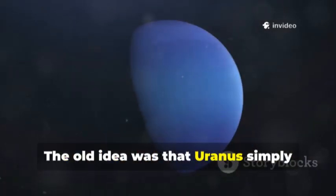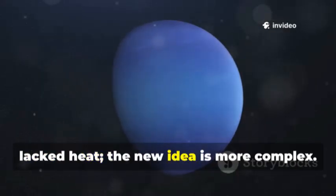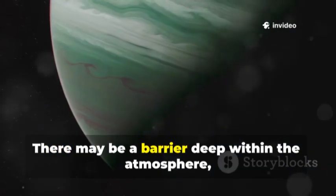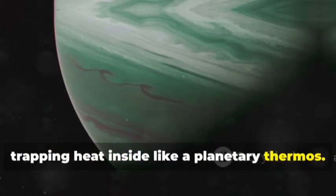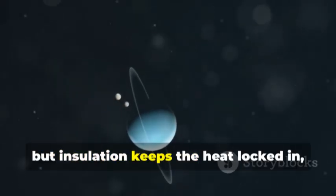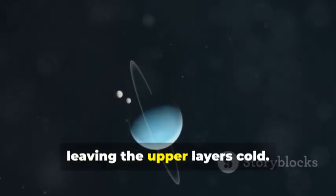The old idea was that Uranus simply lacked heat. The new idea is more complex. There may be a barrier deep within the atmosphere trapping heat inside like a planetary thermos. The core is warm, but insulation keeps the heat locked in, leaving the upper layers cold.